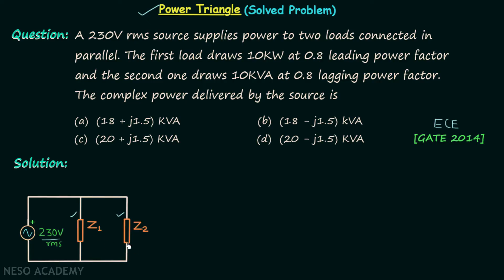This source is supplying power to two loads connected in parallel. Let's say the first load is Z1 and the second load is Z2. For Z1, the first load, it is given in the question that it is drawing 10kW at 0.8 leading power factor. When you look at the unit you understand this is the real power. So for Z1, the real power P1 equals 10kW and the power factor is leading. This means Z1 is capacitive in nature and this implies the reactive power Q1 is going to be negative.